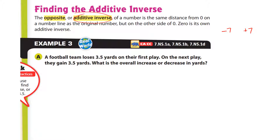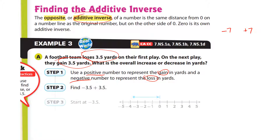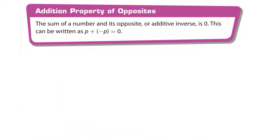A football team loses 3.5 yards; on the next play they gain 3.5 yards. What's the overall change? Positive numbers represent the gain and negative numbers represent the loss. We have negative 3.5 and positive 3.5 — start at negative 3.5 and move up to zero. The change is zero yards. The sum of a number and its opposite is always zero.